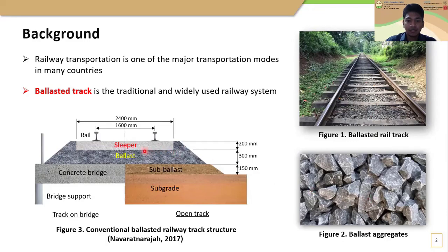When you consider a cross section of a ballast track, we can identify rails, sleepers, ballast, and sub-ballast or concrete bridge deck depending on the track location. The ballast layer acts as the major load-bearing component in a ballast track and facilitates rapid drainage.